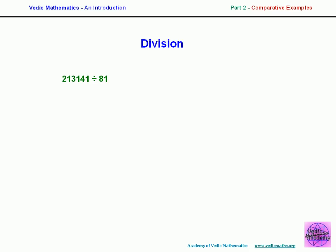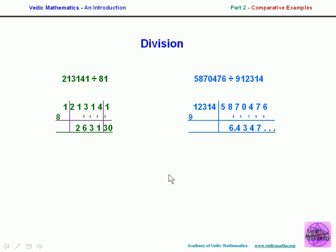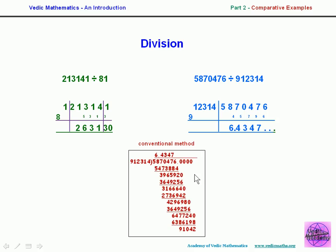Moving on to division: if we divide 213141 by 81 in the Vedic system, we get the answer in one line — 2631 remainder 30 — with just a few carry digits. We only divide by the 8 and hold the other digit over. The conventional method is much more complicated. Another example shows that we can divide any number by any number in the Vedic system in one line, whereas the conventional method involves a lot of work — the text has to be reduced in size just to fit on the page.